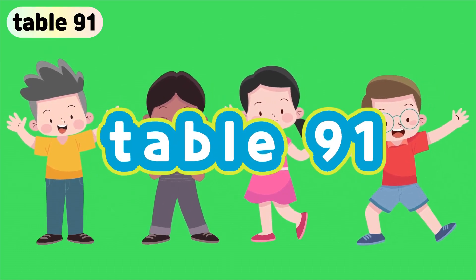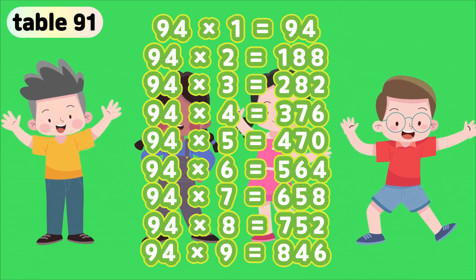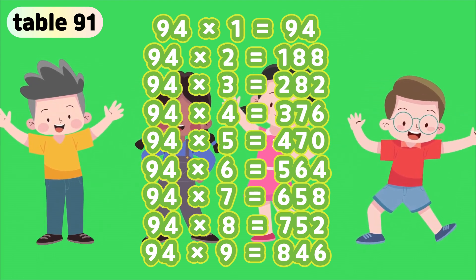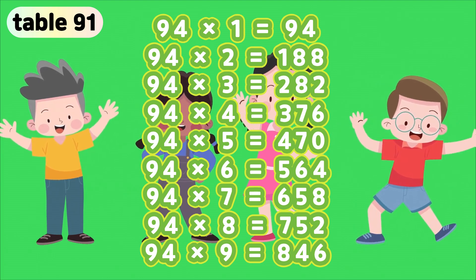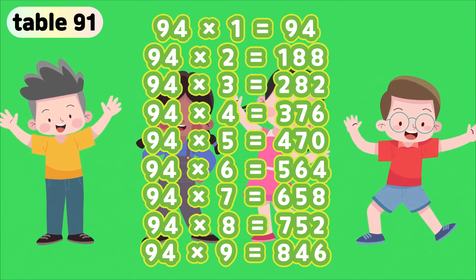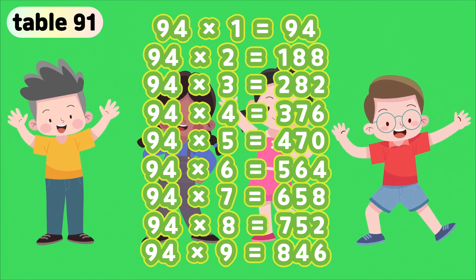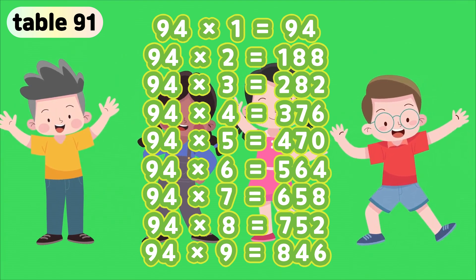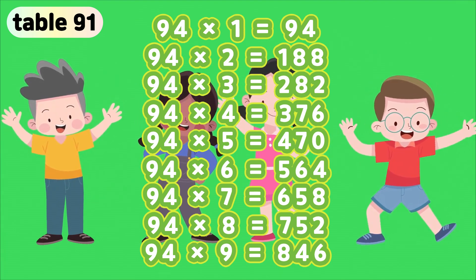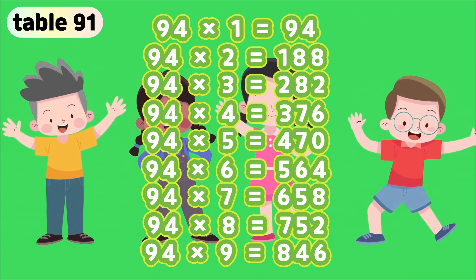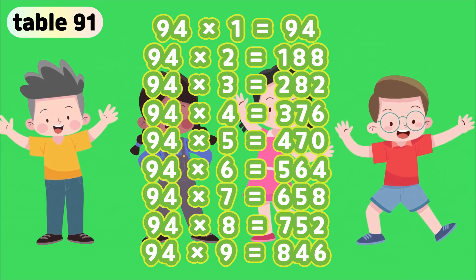Table 94. 94 times 1 is 94. 94 times 2 is 188. 94 times 3 is 282. 94 times 9 is 846.